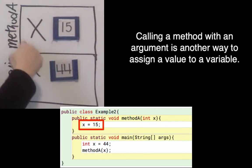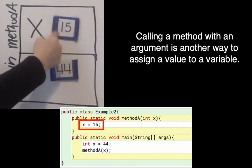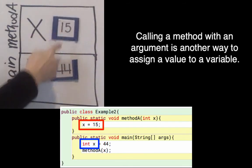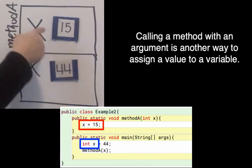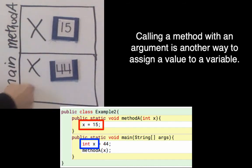I can only access x. And so I can't access the old value of x, which is in main. But when I return from the methodA, I'm going to go back into the main method, and x will stay as 44. It won't have changed.